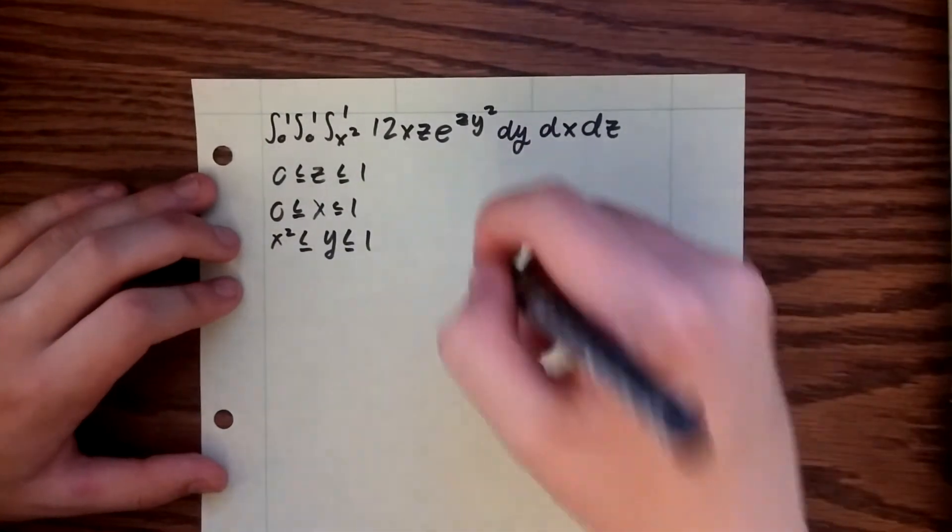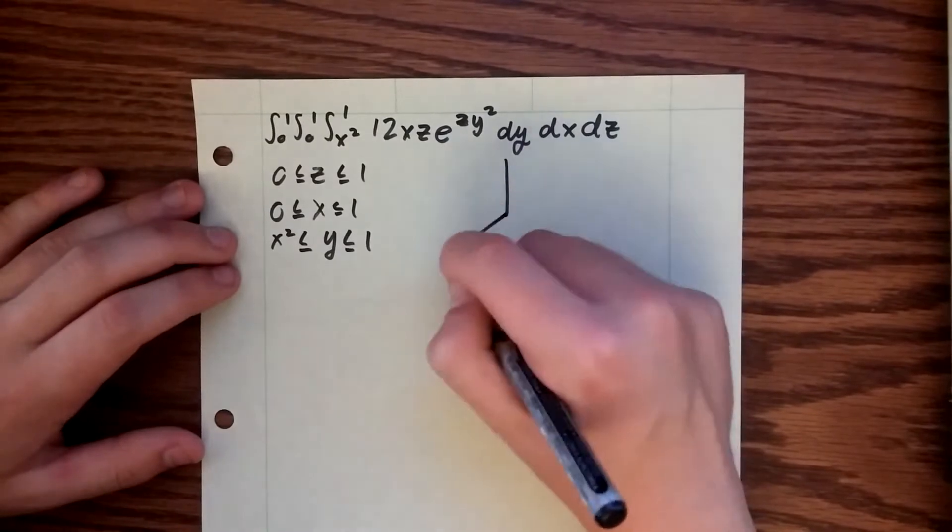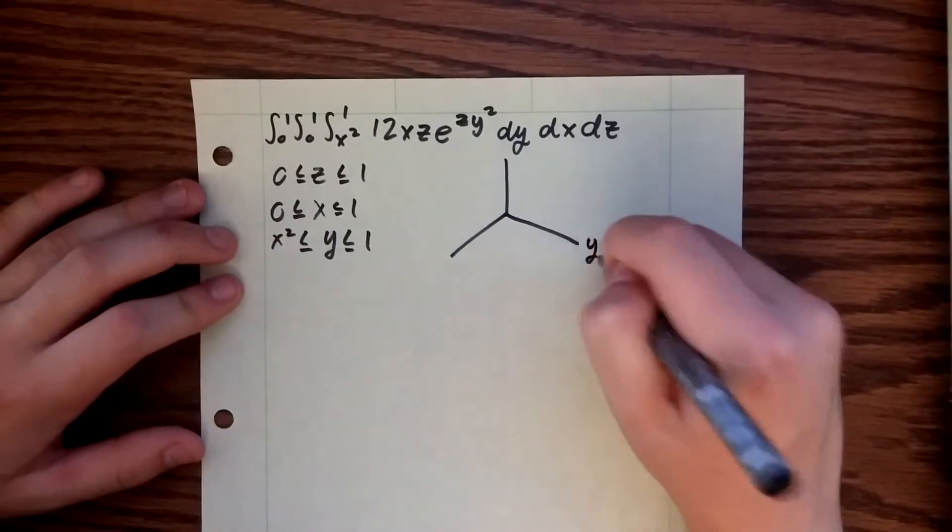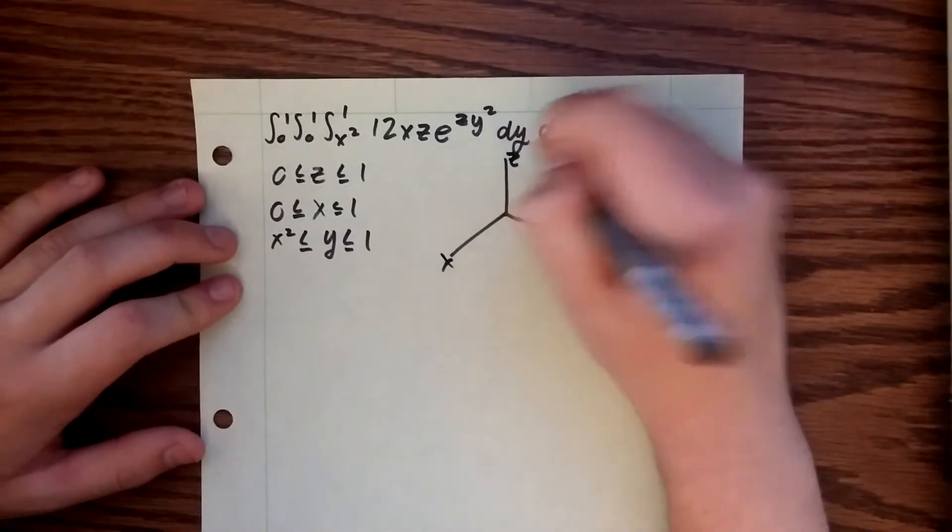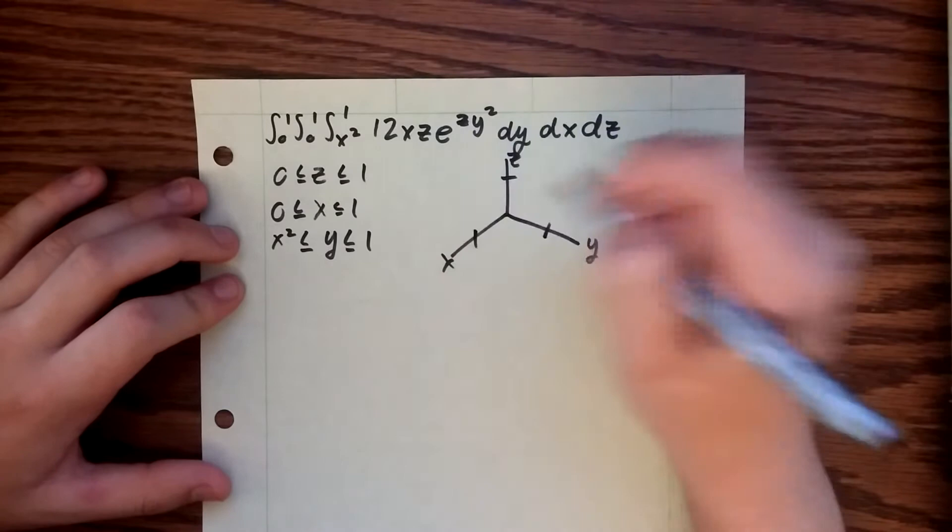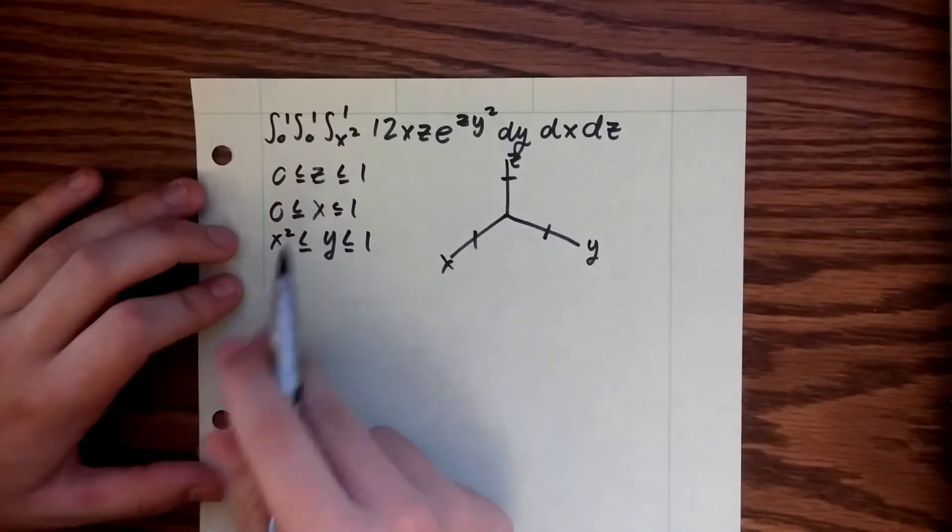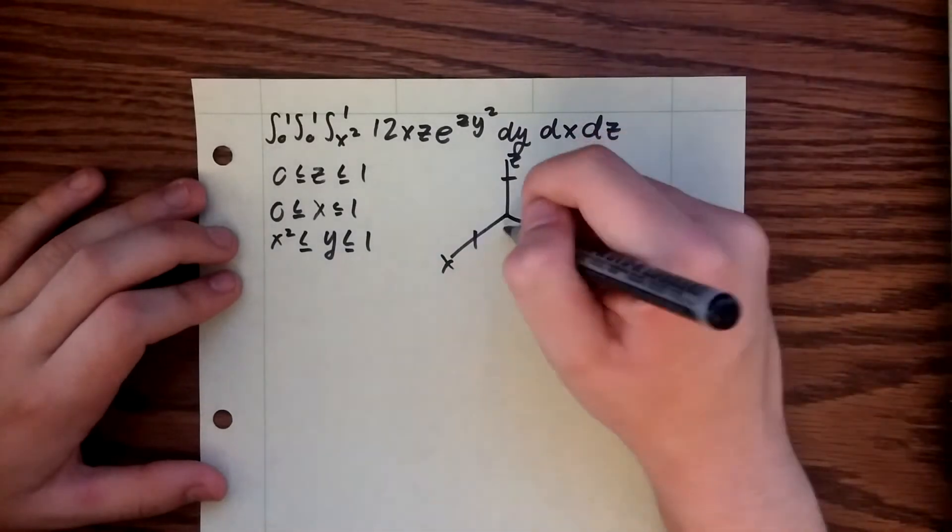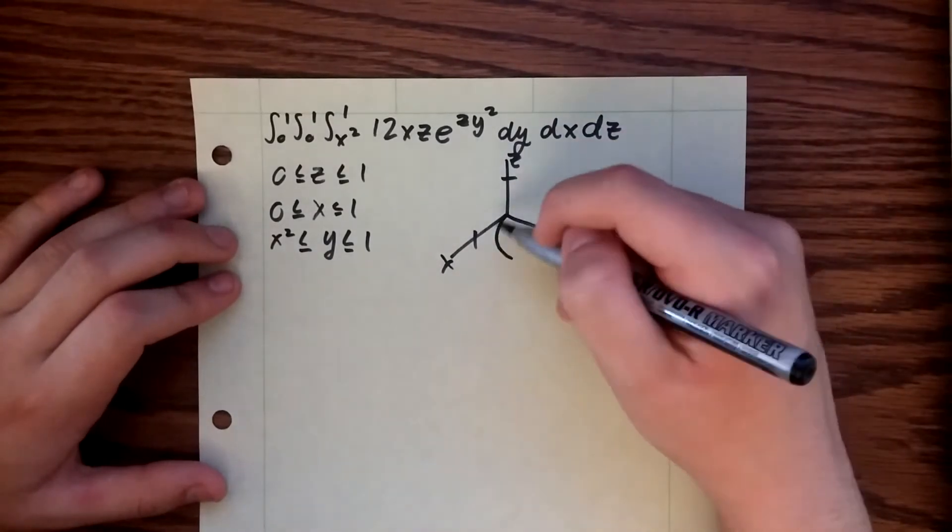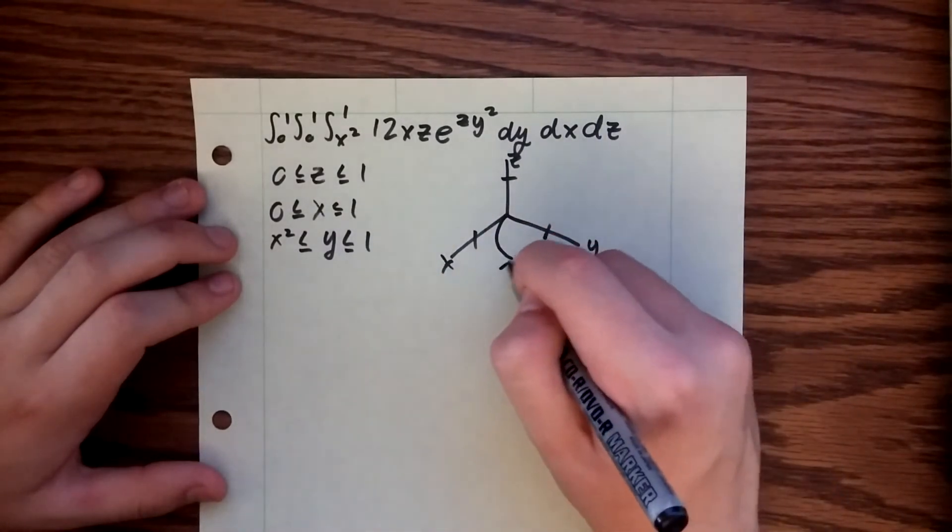Now I also like to sketch out these regions just to make it easier in some situations. Sometimes you don't really need it, but sometimes it makes it easier. So this is y, this is z, this is the usual x axis, and we have a parabola as our lower bound in the xy plane. So I'm going to draw that parabola in this xy plane, and we know our upper bound is the line y equals 1.